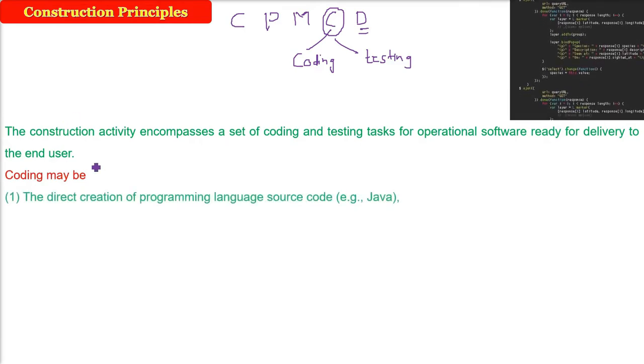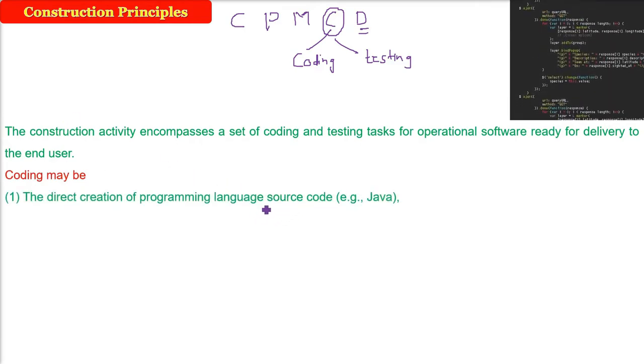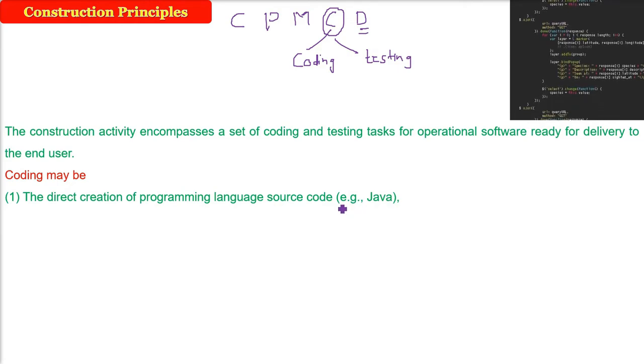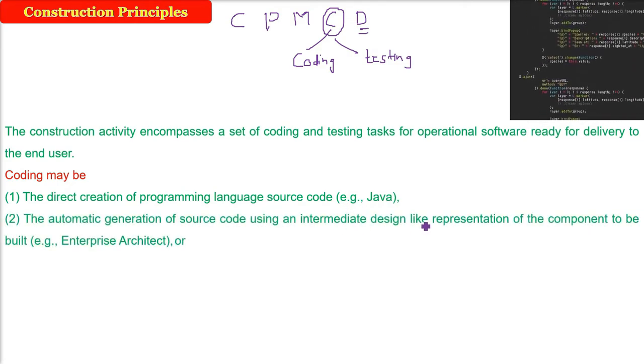Coding can be done in various ways. Direct writing of code, that is the direct creation of programming language source code, for example Java, C-Sharp, etc.